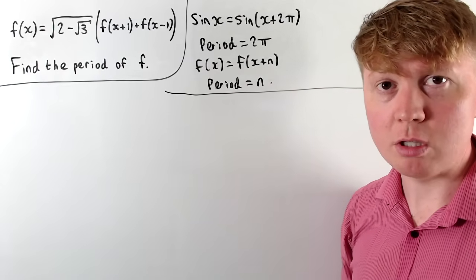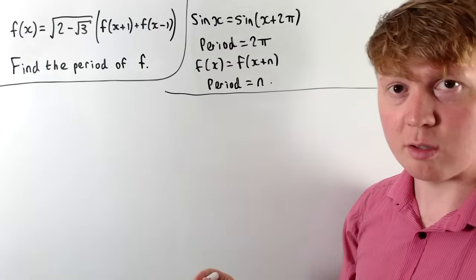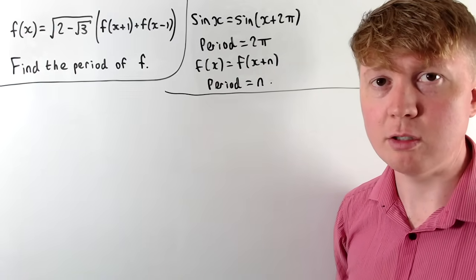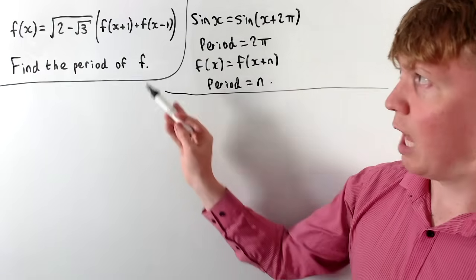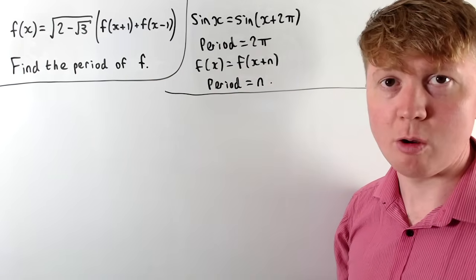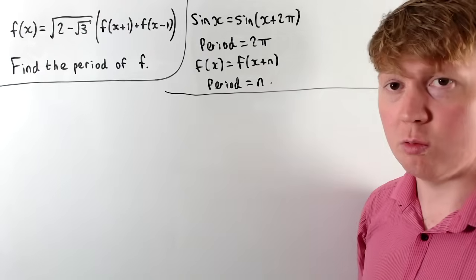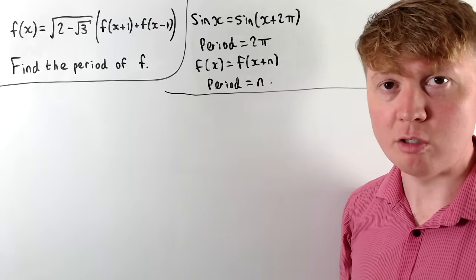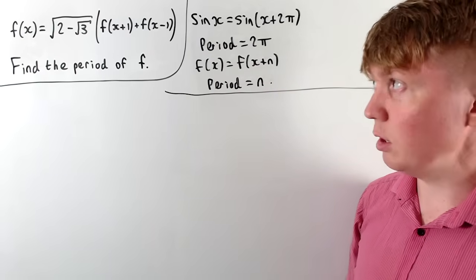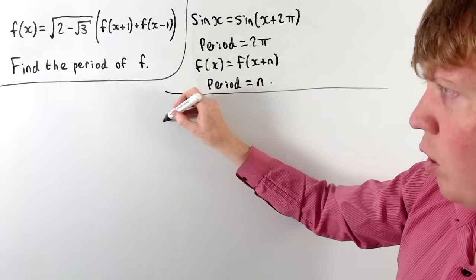A strategy we could use to get started is to try substituting in some different values in place of x to extract different relationships between f(x), f(x+1), f(x-1), and so on. We've got x, x+1, x-1 in the equation, which suggests the period is going to be an integer. So we could try substituting, instead of having x, let's replace x by x+1.